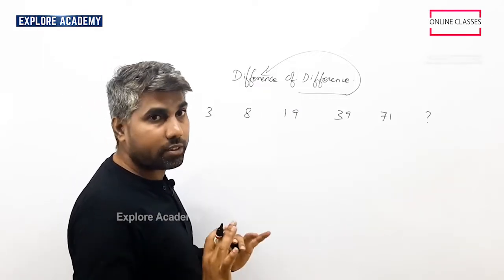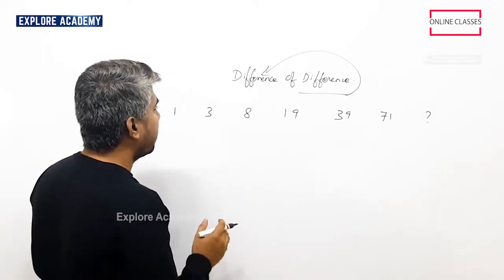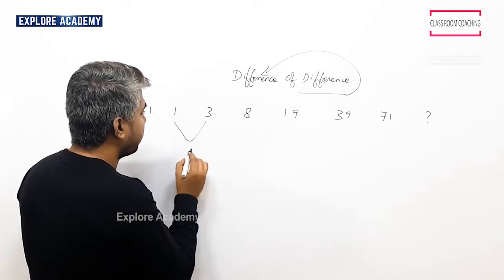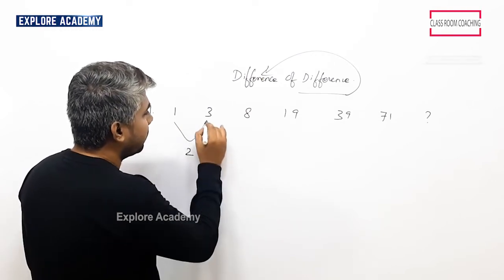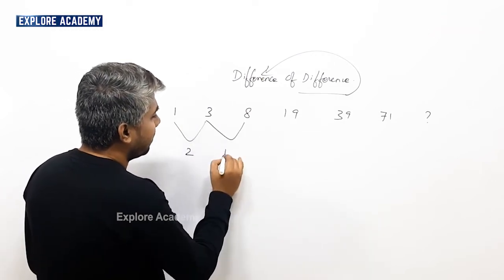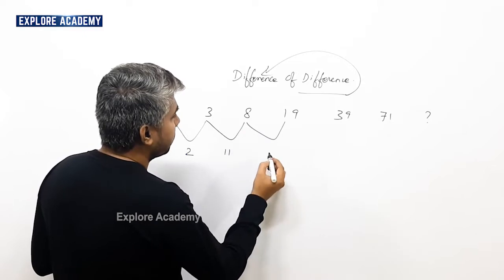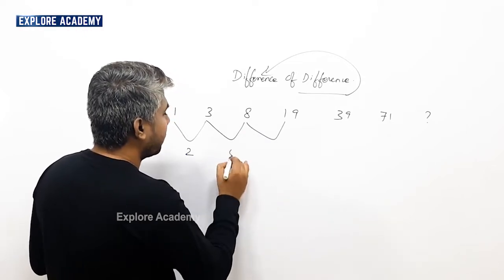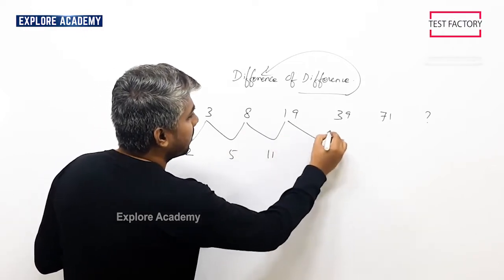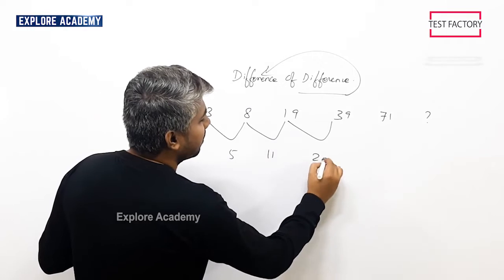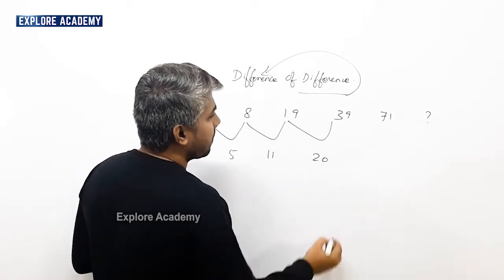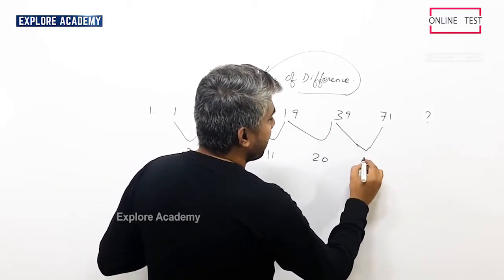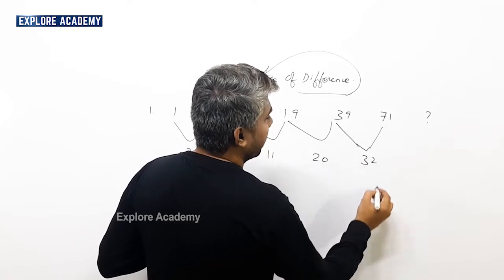Let's try this. First time difference: 2, 11, 5, 11, 20. C, 32.